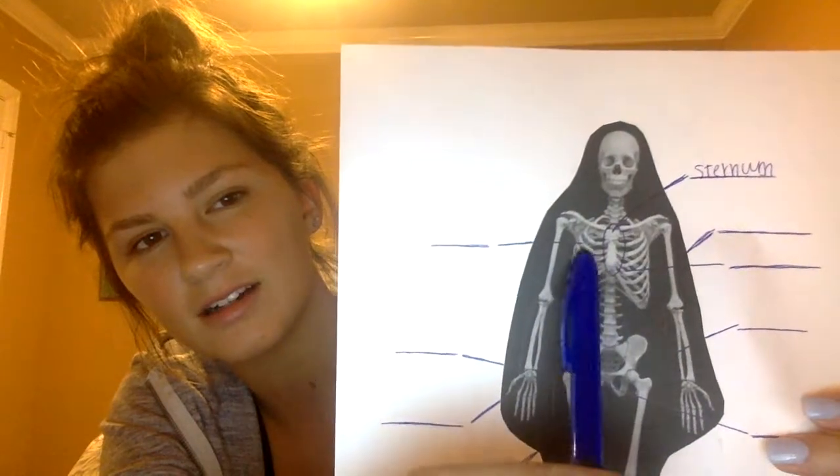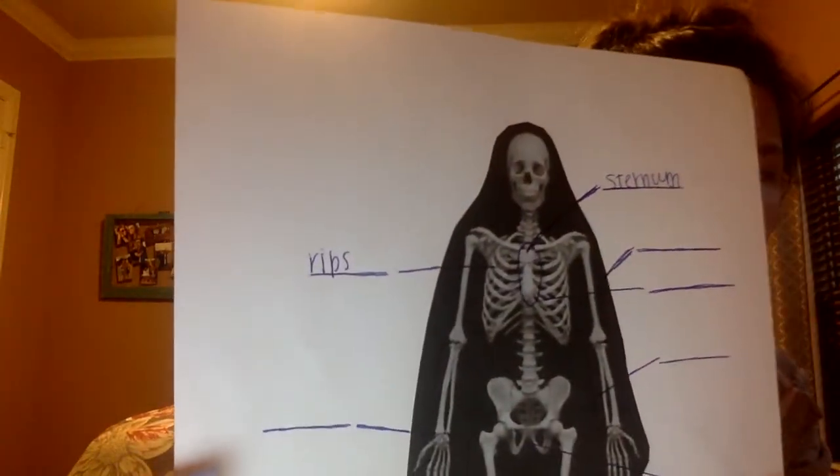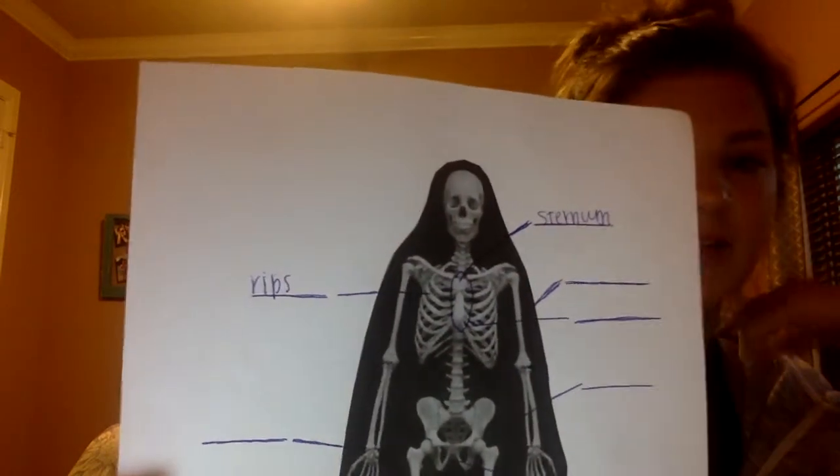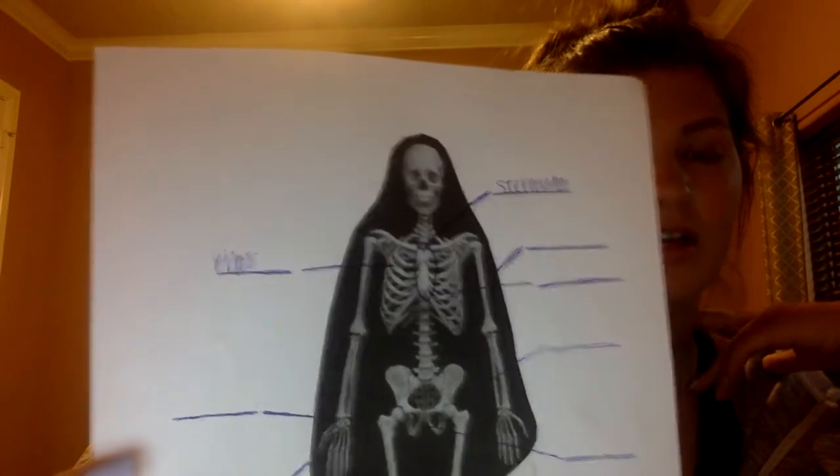First, I'm going to start by labeling the parts of the body that belong to the axial region of our body. First is the sternum, which is this part I have just circled right there in the center of our thoracic cage. Another part of our thoracic cage is our ribs. The ribs are split into true ribs and false ribs, and the true ribs are the upper ribs that are connected to our sternum by what we call costal cartilage.